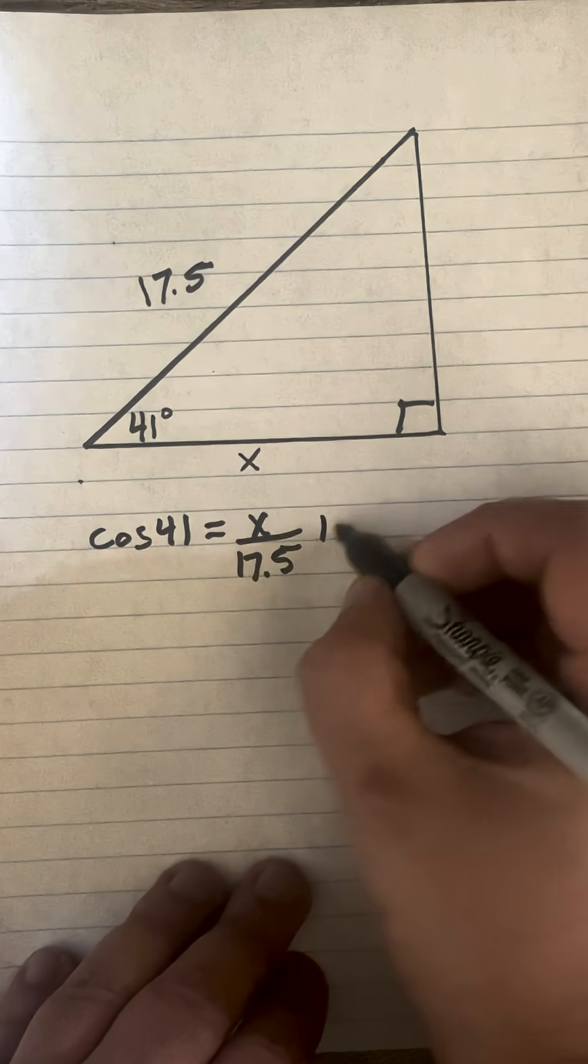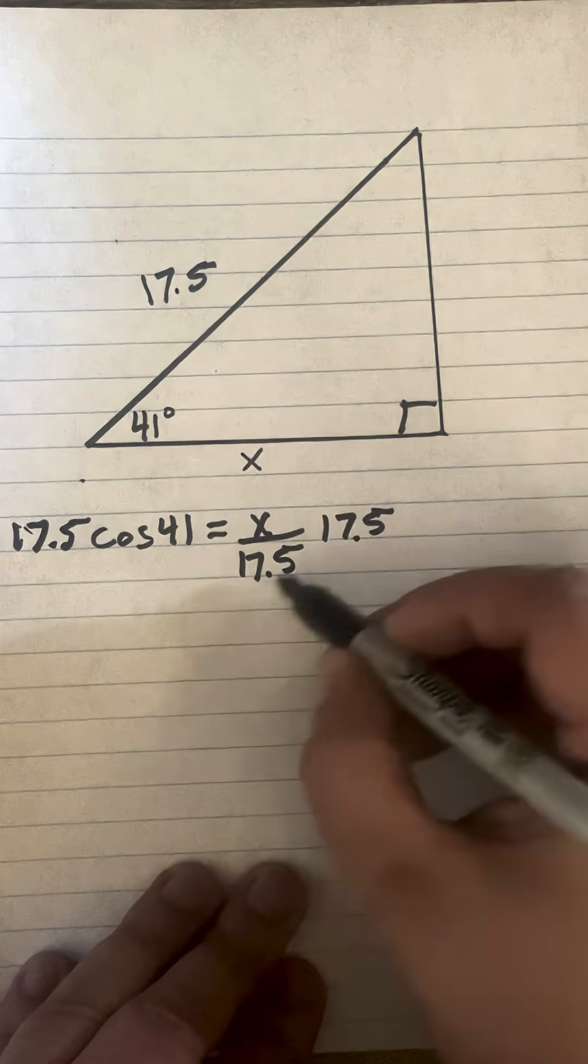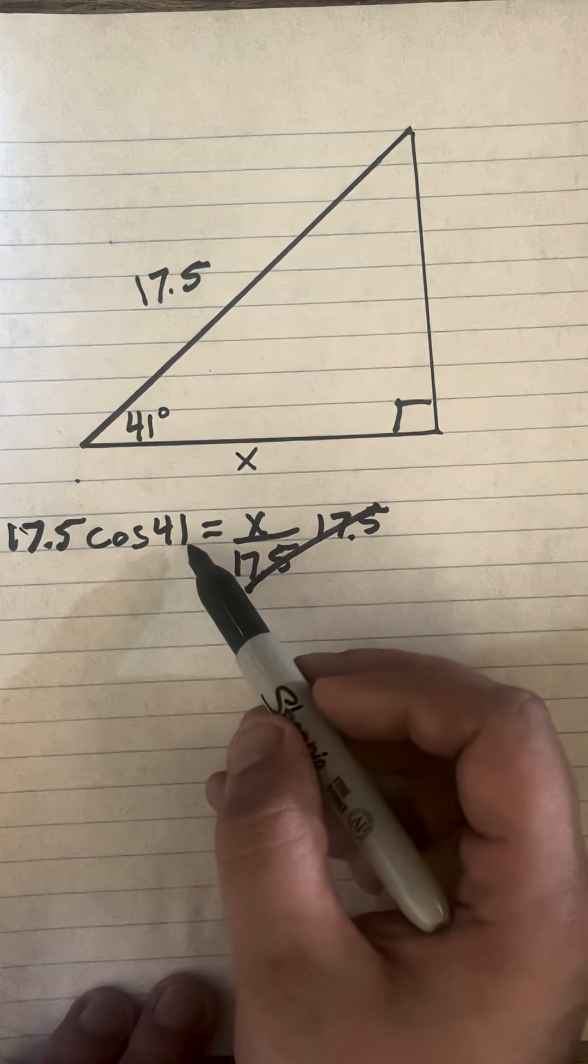Now we want to get x by itself, so we're going to times both sides by 17.5. That cancels out, and let's do this on the slide rule to find x.